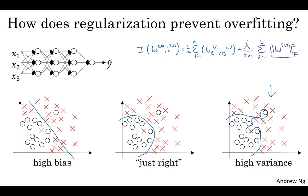One piece of intuition is that if you crank the regularization lambda to be really, really big, they'll be really incentivized to set the weight matrices W to be reasonably close to zero. So one piece of intuition is maybe it'll set the weight to be so close to zero for a lot of hidden units that it's basically zeroing out a lot of the impact of these hidden units.